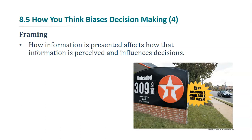The way information is presented can affect how we perceive it and make decisions. When credit card payment at gas pumps first became available, many stations advertised a particular price with a discount for paying cash. They could just as easily have framed this as a penalty for using a credit card. People are more likely to think they're getting a good deal when framed as a discount. Similarly, people are more likely to buy meat labeled 75% lean than 25% fat, even though those two descriptions are exactly the same.